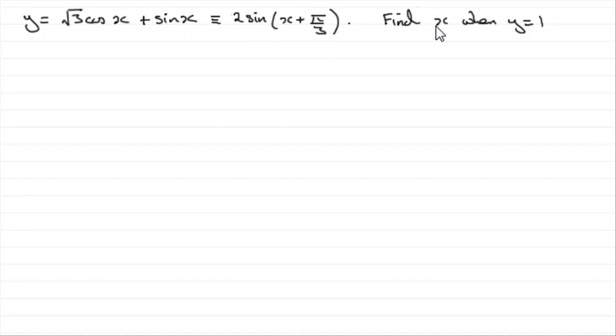So in order to find x between 0 and 2 pi radians when y is 1, what I'm going to do is put this part equal to 1. So that's basically where we start.